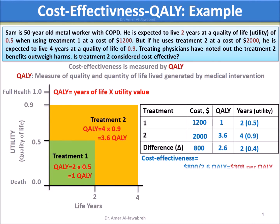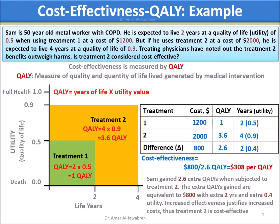Cost effectiveness is Delta Cost over Delta QALY, which equals $308 per QALY. Sam gained 2.6 extra QALYs when subjected to Treatment 2. The extra QALYs gained are equivalent to $800 with an extra 2 years and extra 0.4 utility. Increased effectiveness justifies increased costs. Thus, Treatment 2 is cost effective.